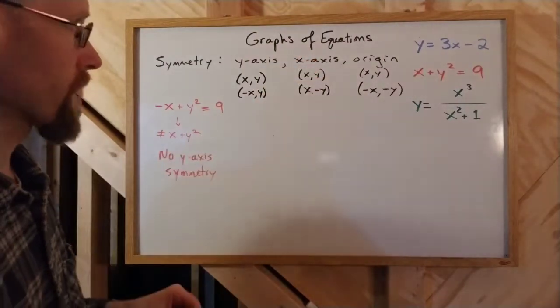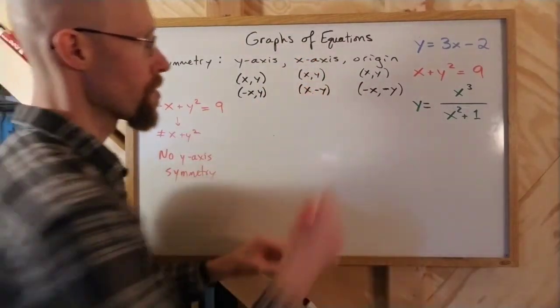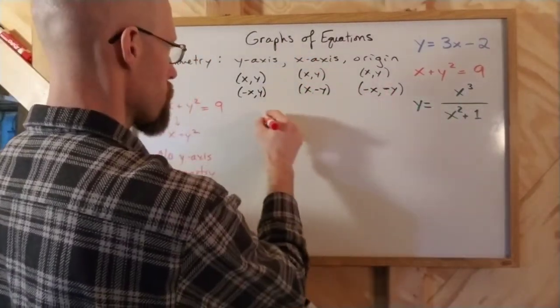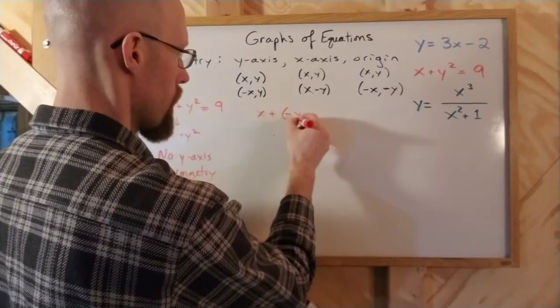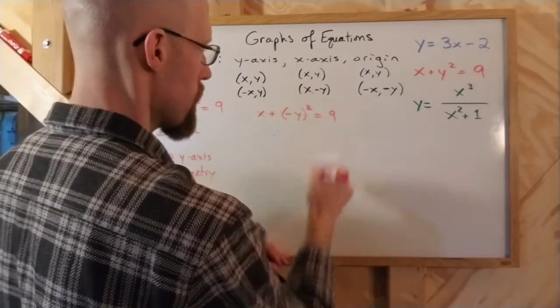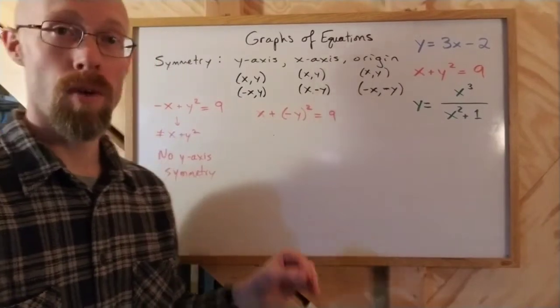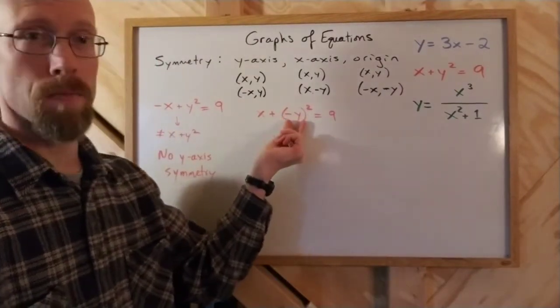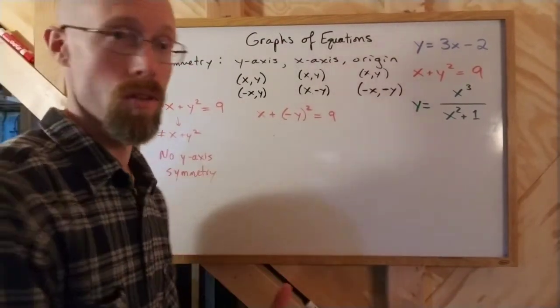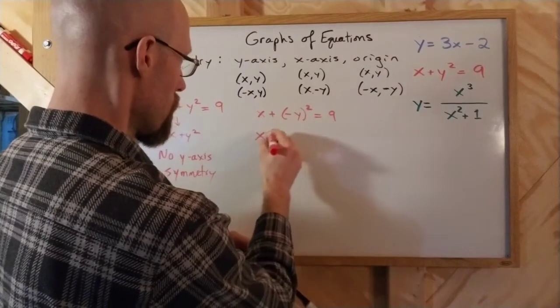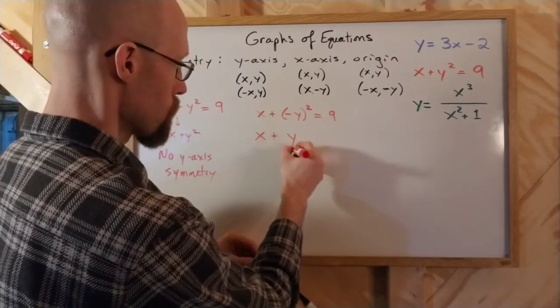So let's check the x-axis now. X-axis, I switch out the y's. So I get x plus negative y squared equals 9. But we determined already that the opposite of something squared is the same as the original thing squared. So this is actually the same as y squared.